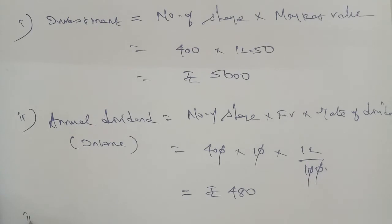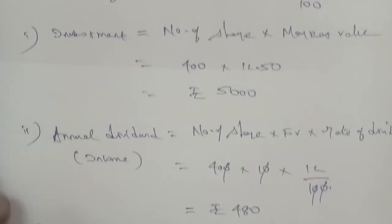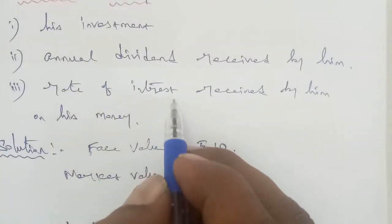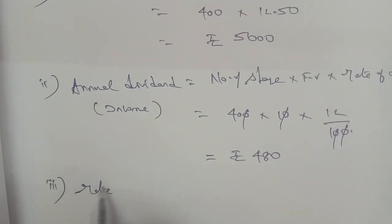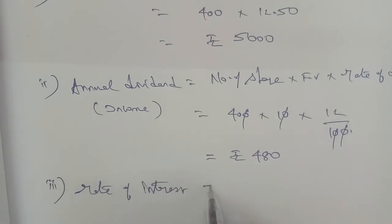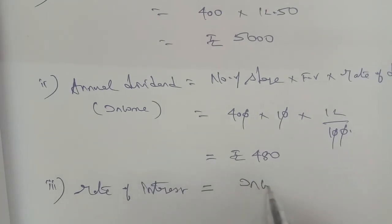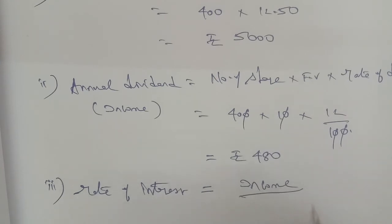That is subdivision 3, which is rate of interest. The rate of interest formula is equal to income divided by investment into 100.